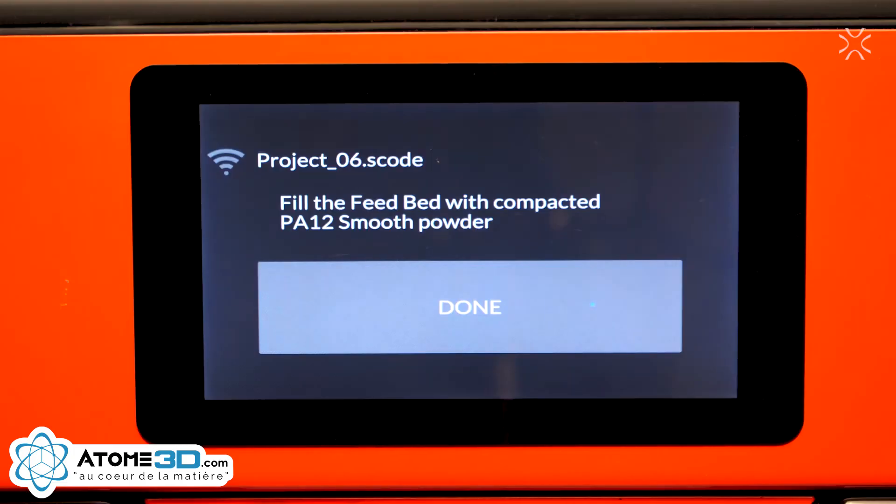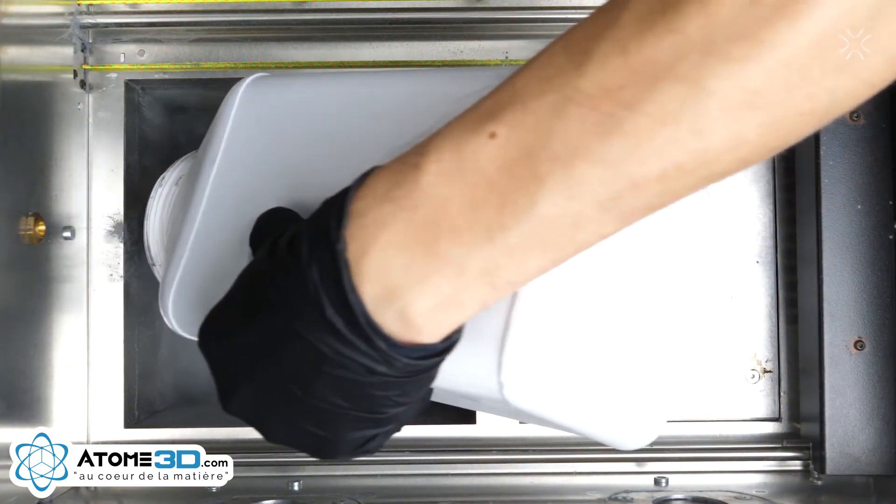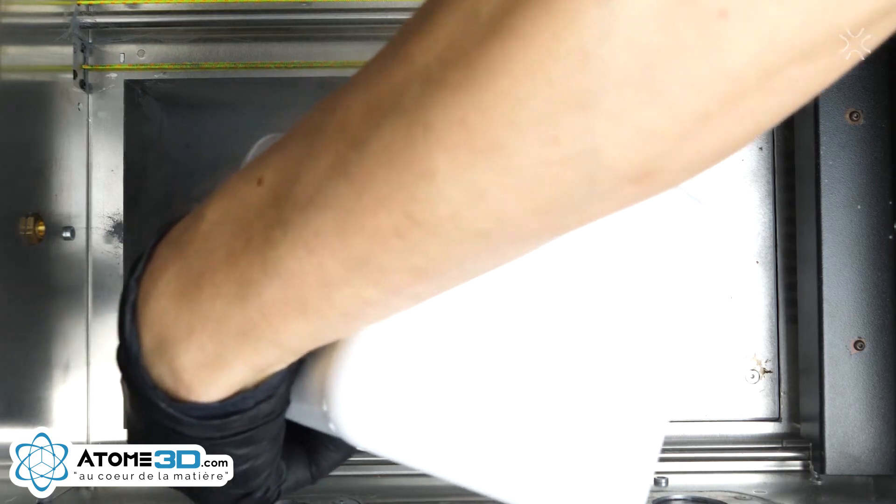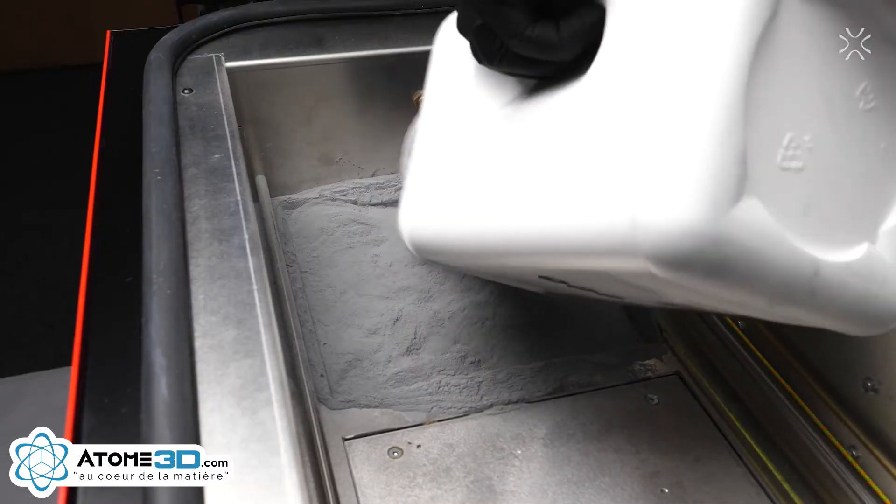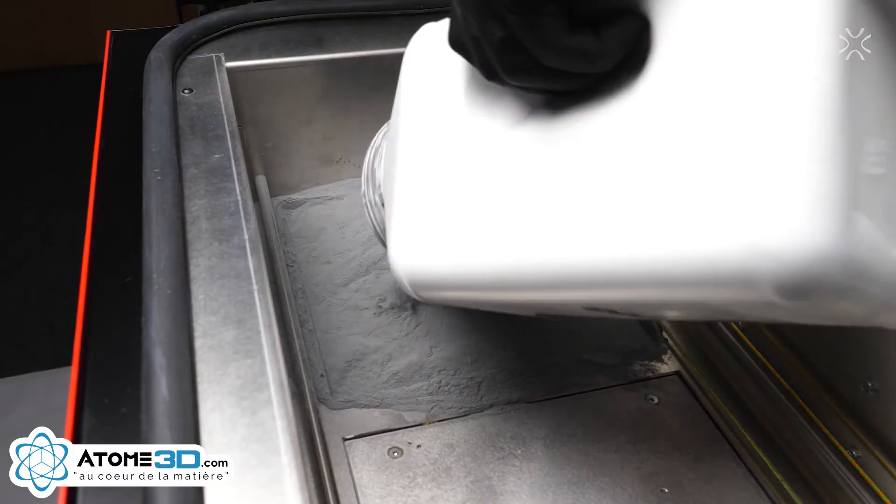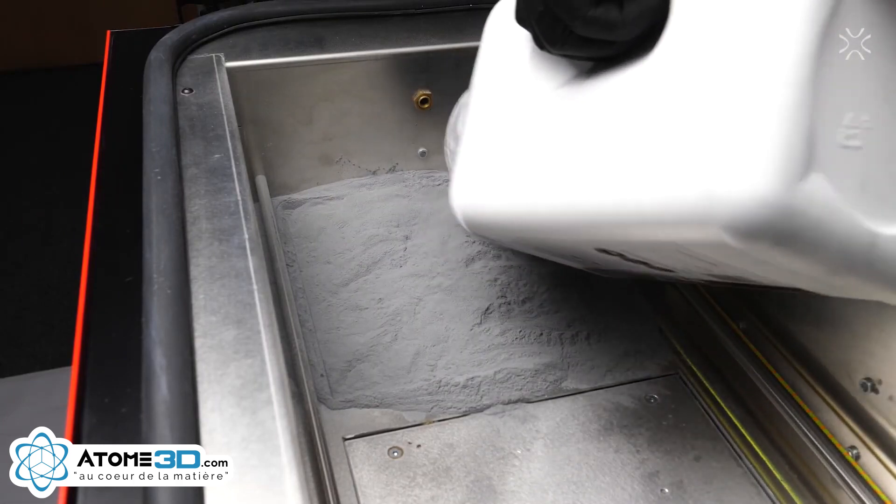In the next step, fill the feed bed with a printing powder. A message on the screen will remind you which powder should be used. Open the box with your powder and pour it directly into the feed bed. It is crucial to pour in the powder from the low height. Remember to add a bit more powder than fits in the feed bed.